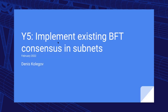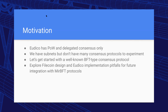The Y5 project is about implementing existing BFT-type consensus in subnets. The motivation is that UtiCA has only two simple consensus protocols, and to investigate and explore new subnet features, we need to add other consensus protocols. We discussed all candidates and decided to implement the TenderMint protocol, but in a black-box or service-based model.